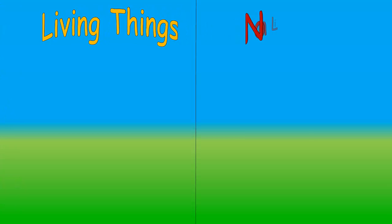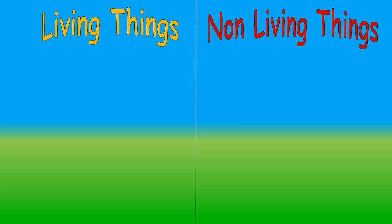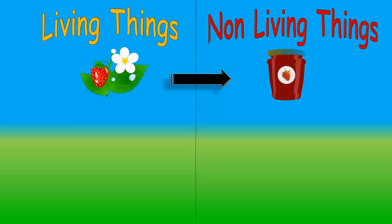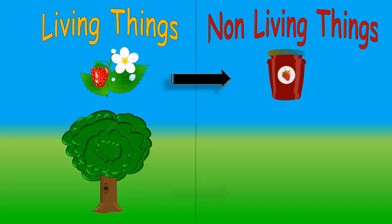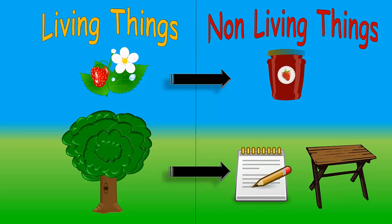Some living things can be used to make non-living things. This strawberry plant is used to make strawberry jam. This tree is used to make paper, pencils, and tables.